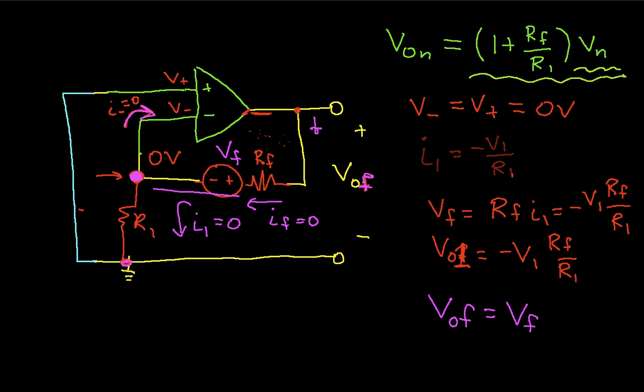The noise at the output of the op-amp due to R1 is given by this expression. And this is equal to minus V1, where V1 is the RMS noise generated by R1, times the ratio RF over R1.